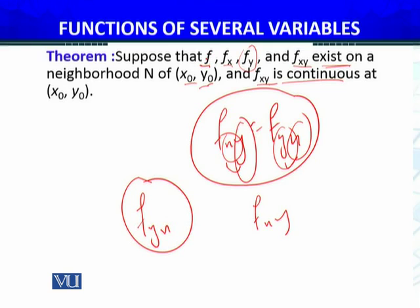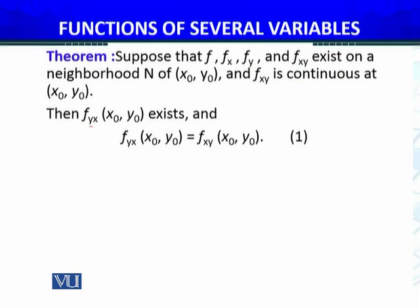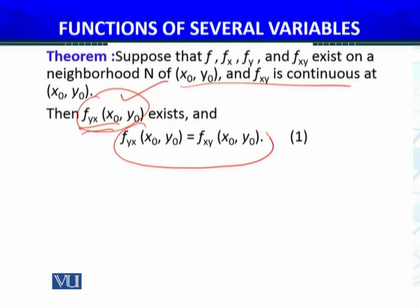If the partial derivative with respect to x, y, and xy exist and f_xy is continuous, then f_yx — the order-changed partial derivative — will also exist under these conditions, and moreover both mixed derivatives will be equal.